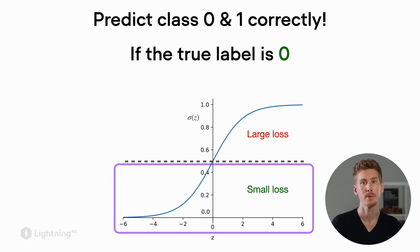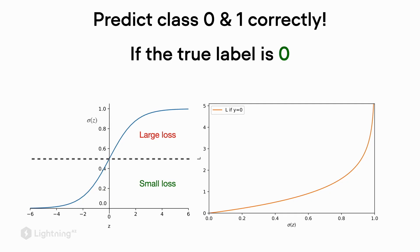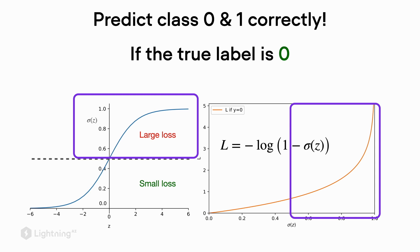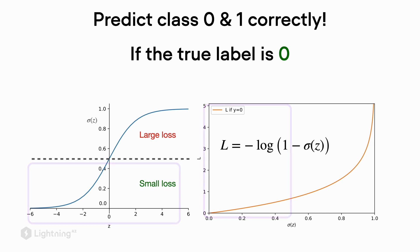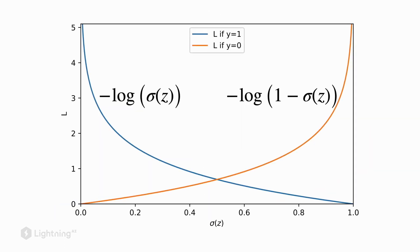When the true label is 0, we want the classifier to output class label 0, so the activation should fall below the threshold. The mathematical formula for this case is similar to before: in the negative logarithm we have 1 minus the activation instead of the activation. As a consequence, the curve is essentially mirrored — large activation gives large loss, small activation gives small loss. Here we have both curves side by side: on the left the case where the true class label is 1, and on the right the loss for the case where the true class label is 0.